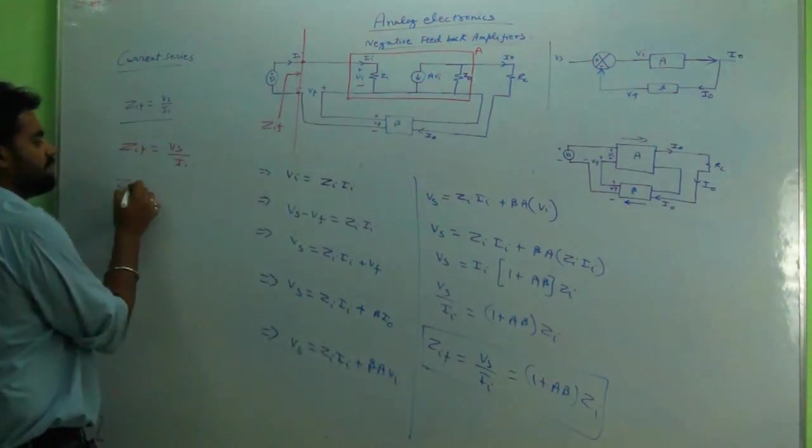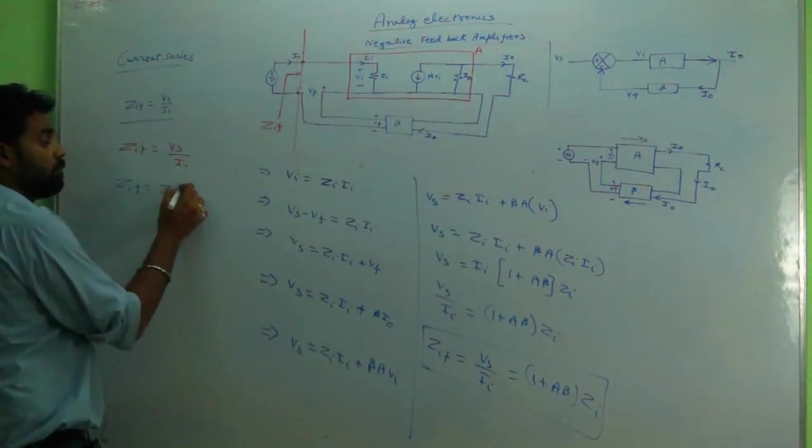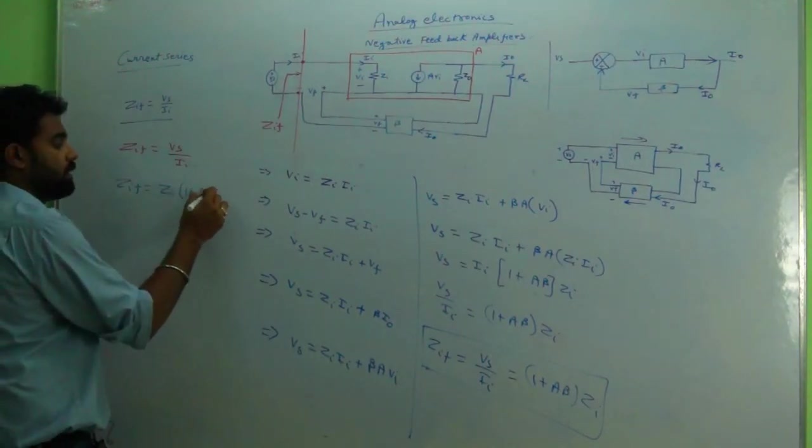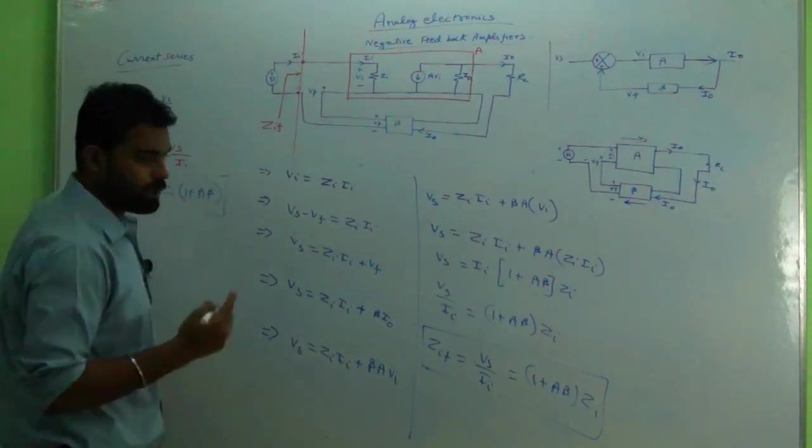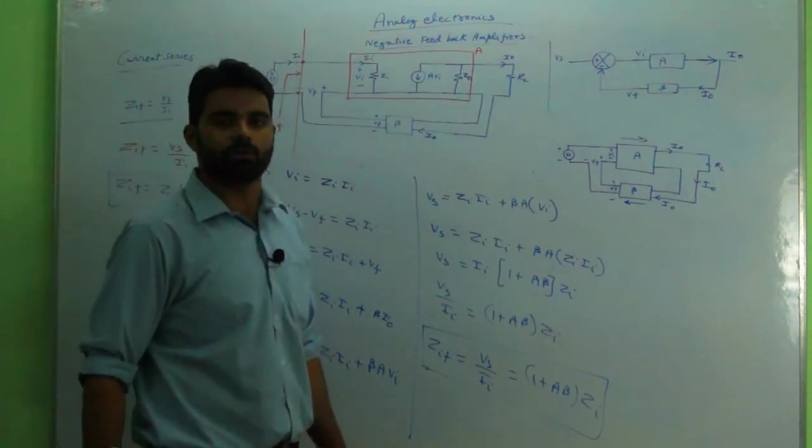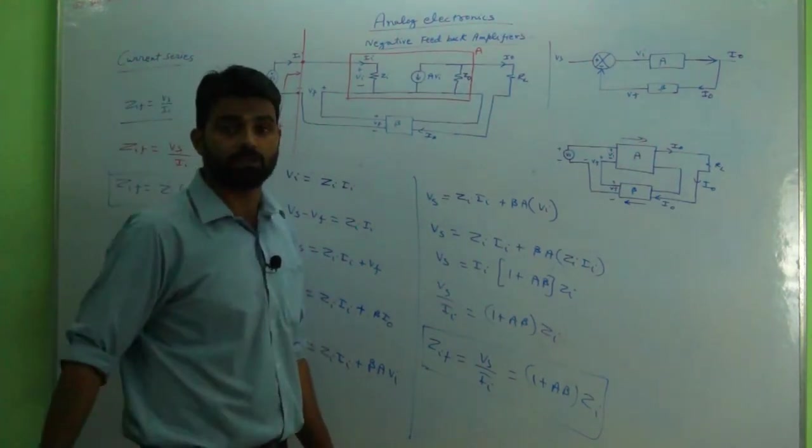We can say that zif is increasing by a factor of 1 plus a beta. Now in the next part we will deal with output impedance in current series.